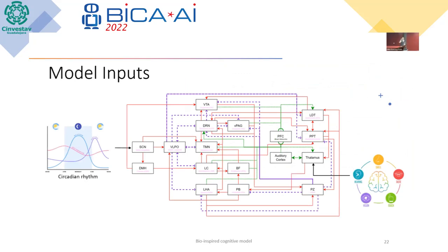Our model has two inputs. The first is the circadian rhythm — a rhythm that modulates our vigilance. That rhythm is modulated in humans by neurotransmitters, by light in the environment, and other factors. For this model we use a simplification: a sinusoidal signal. The second input is the senses, like hearing, smell, taste, etc. The senses are processed by tones.